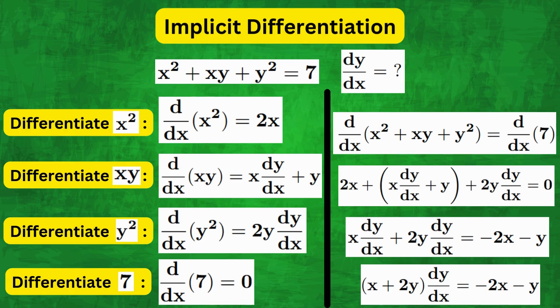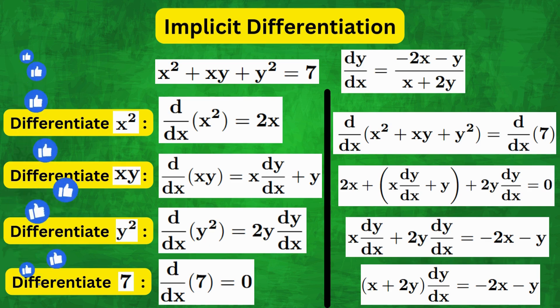And finally, making dy by dx the subject, we get dy by dx equals to minus 2x minus y over x plus 2y, which is the answer.